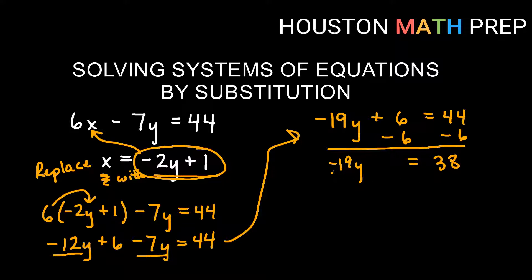That will give us negative 19y equal to 38. And then I'll have to divide by the negative 19 in front of y. And it turns out that 38 divided by 19 is 2. So since I have a positive divided by a negative, my y is actually negative 2.